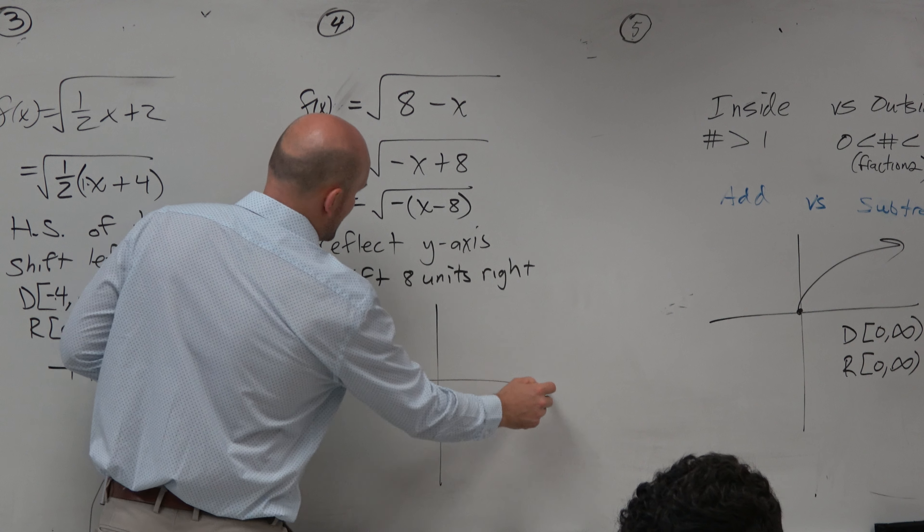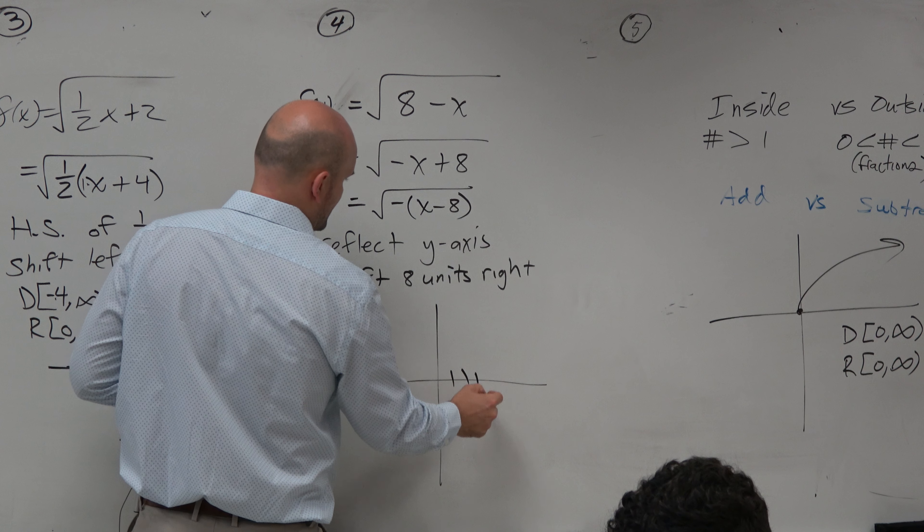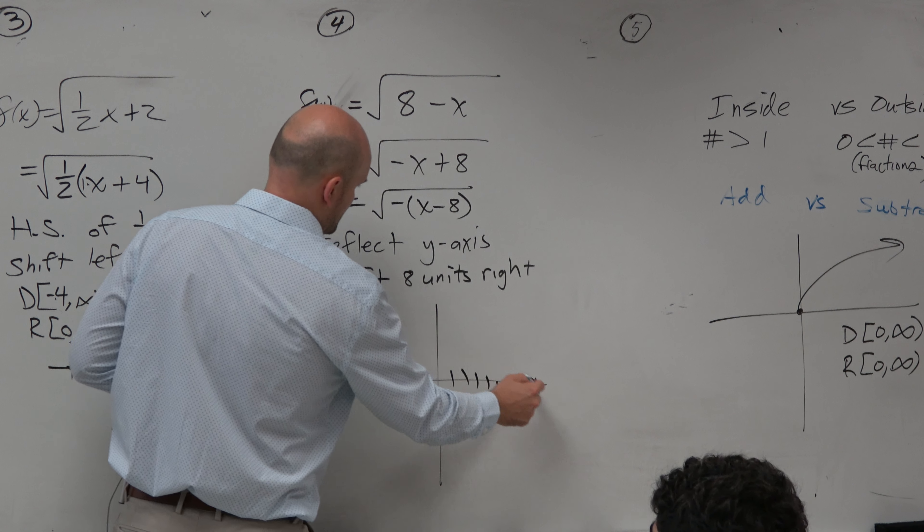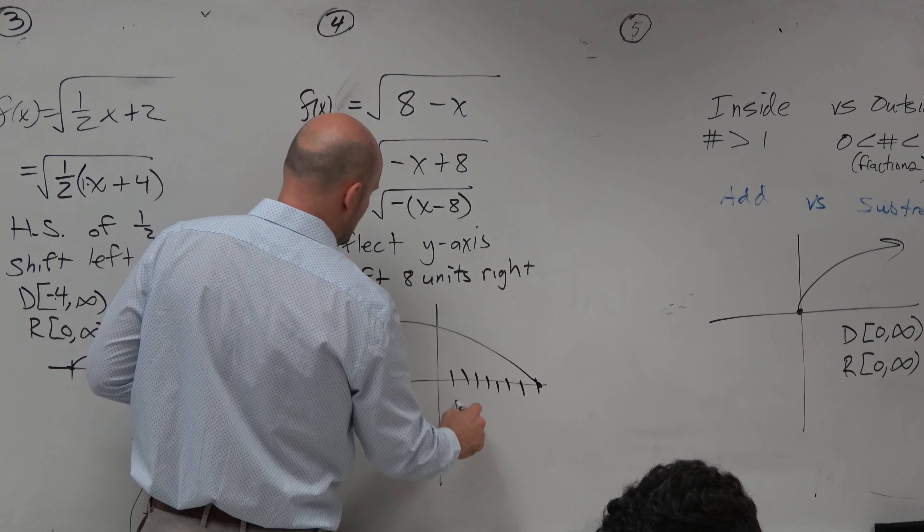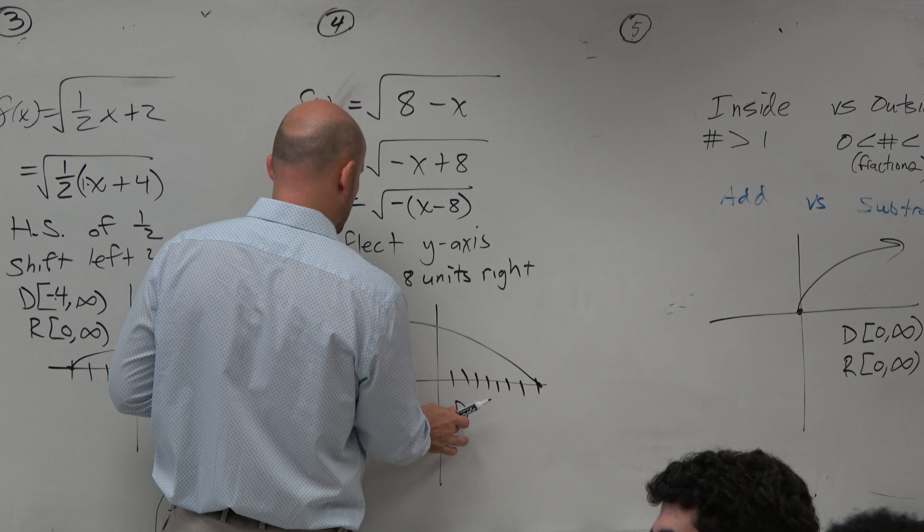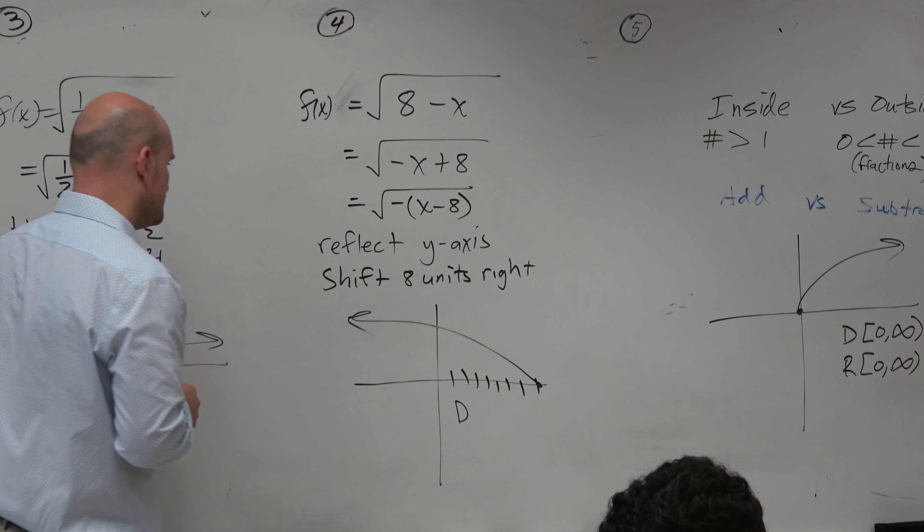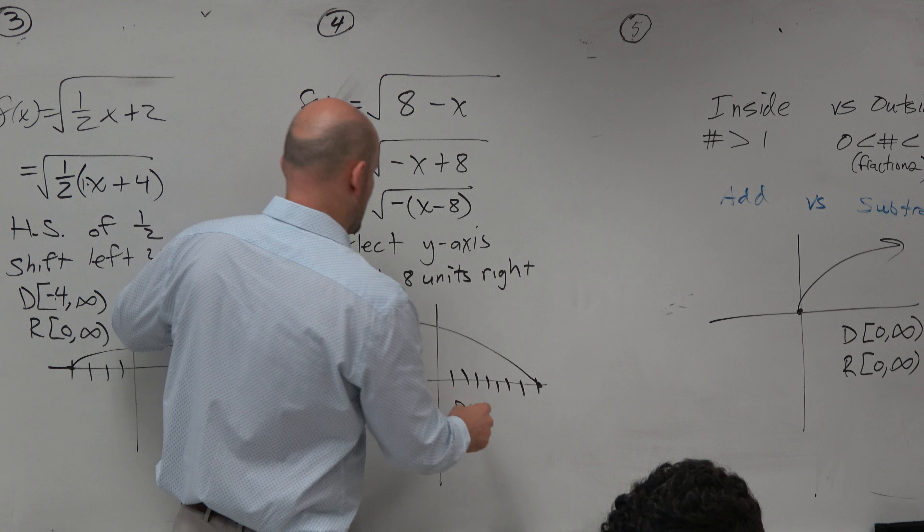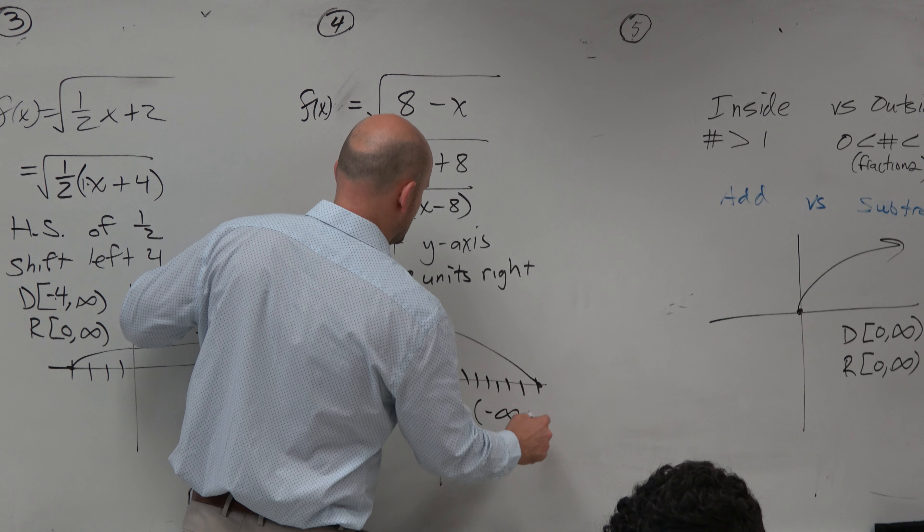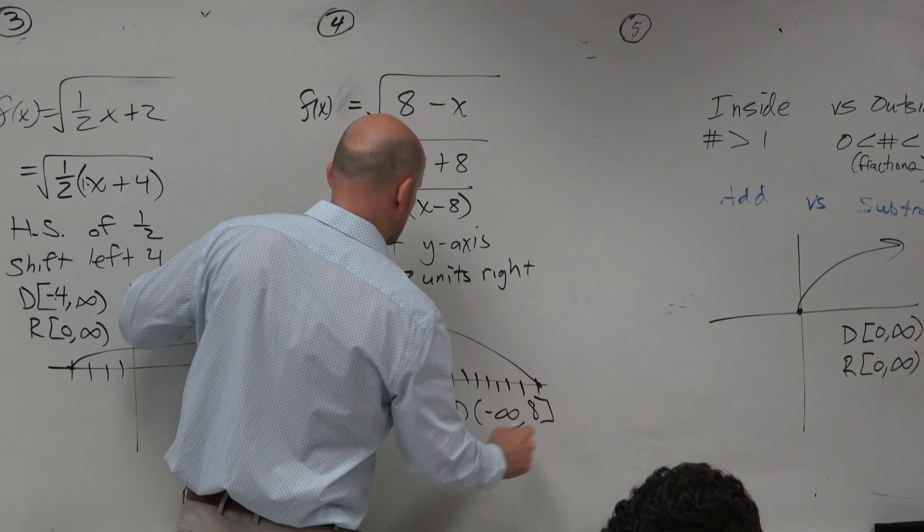So this graph is reflected, and then 1, 2, 3, 4, 5, 6, 7, 8. So the domain is now going to be from negative infinity to 8. And the range—nothing has ever happened to the range, right, in all three of these problems. So the range never gets impacted.